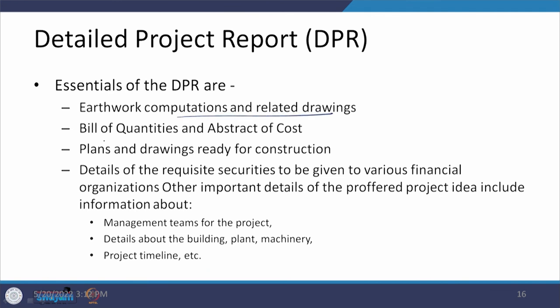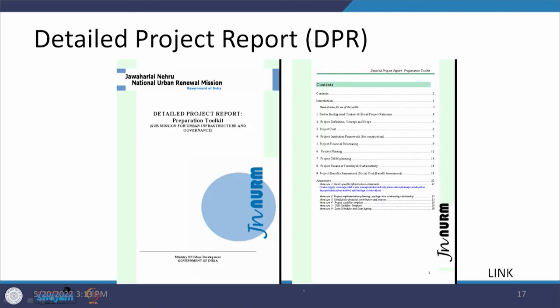The DPR also includes computations and drawings, Bills of Quantities (BOQs) or abstracts of cost prepared as estimates, plans and drawings ready for construction, and details of various securities to be given to financial organizations or the timeline management team. All of these together constitute a report which can be 30, 40, 50, or even 100 pages depending on the magnitude of the project. This is the type of detailed project report prepared under urban infrastructure and government missions, and this document is what gets used in the field for construction.